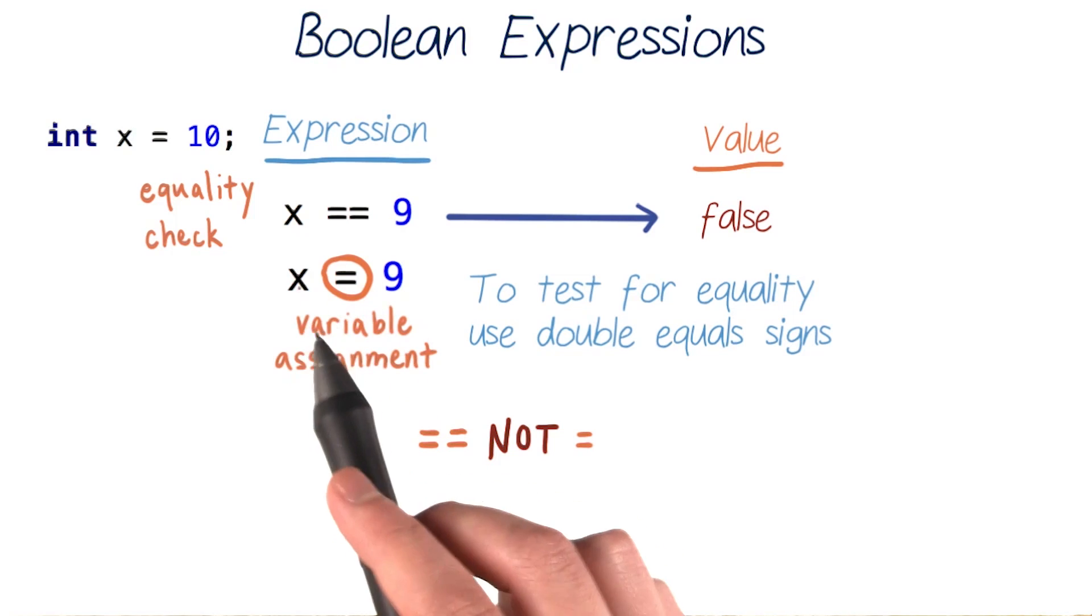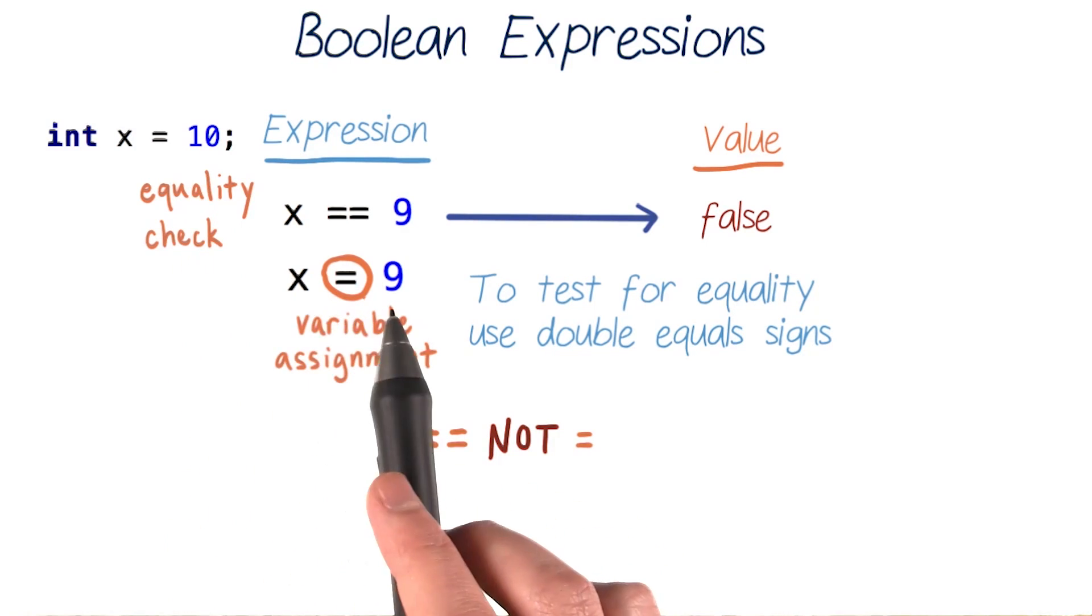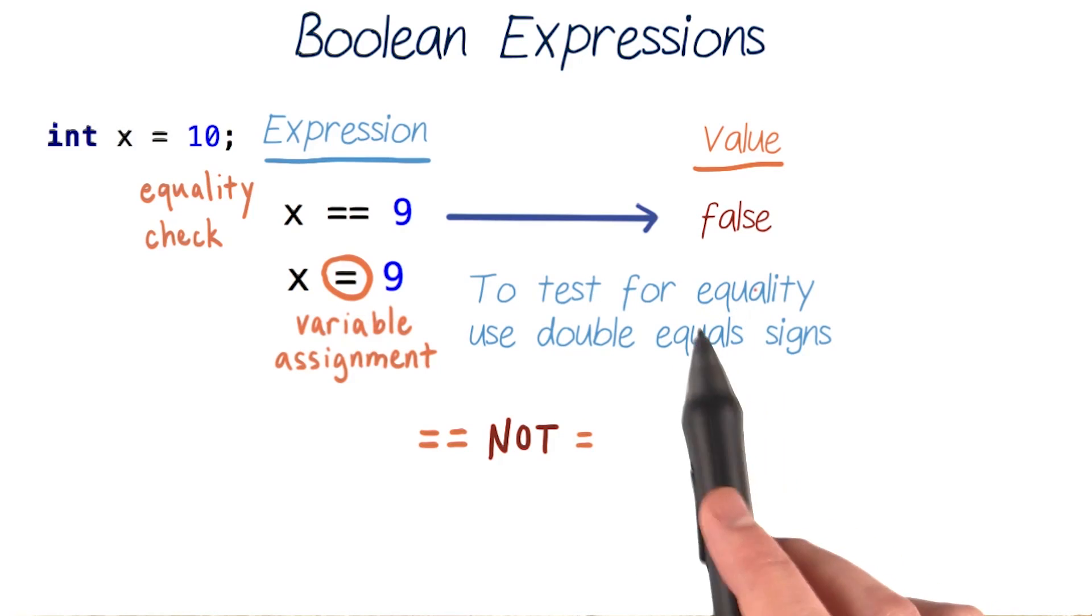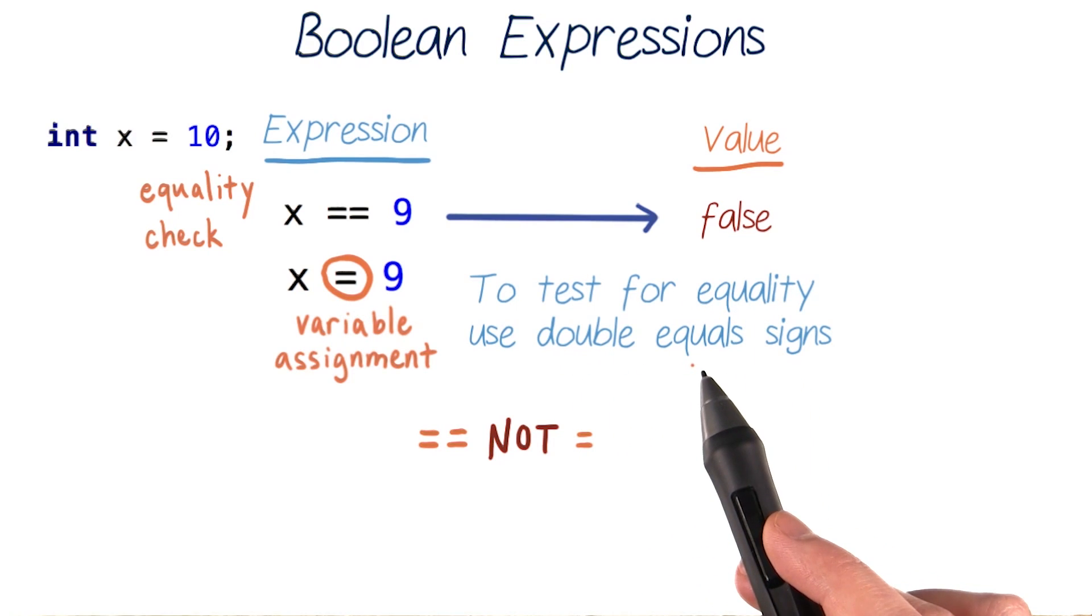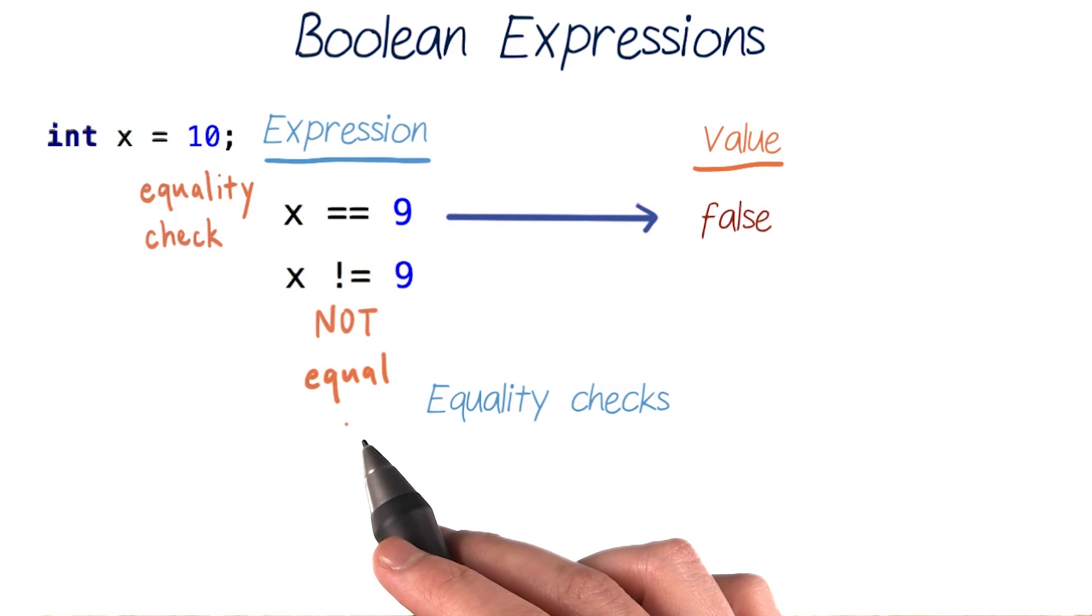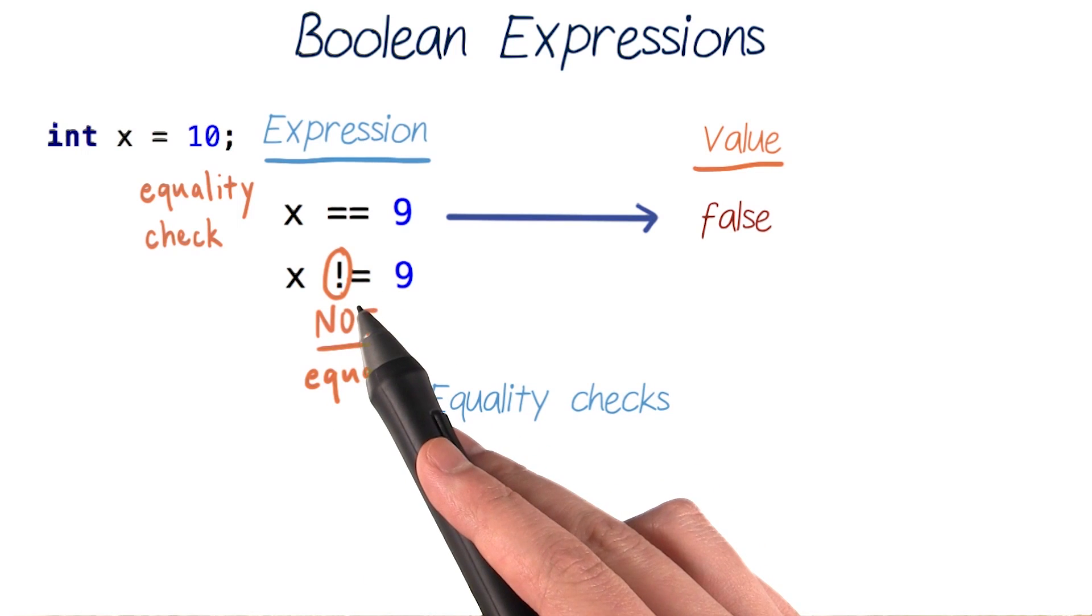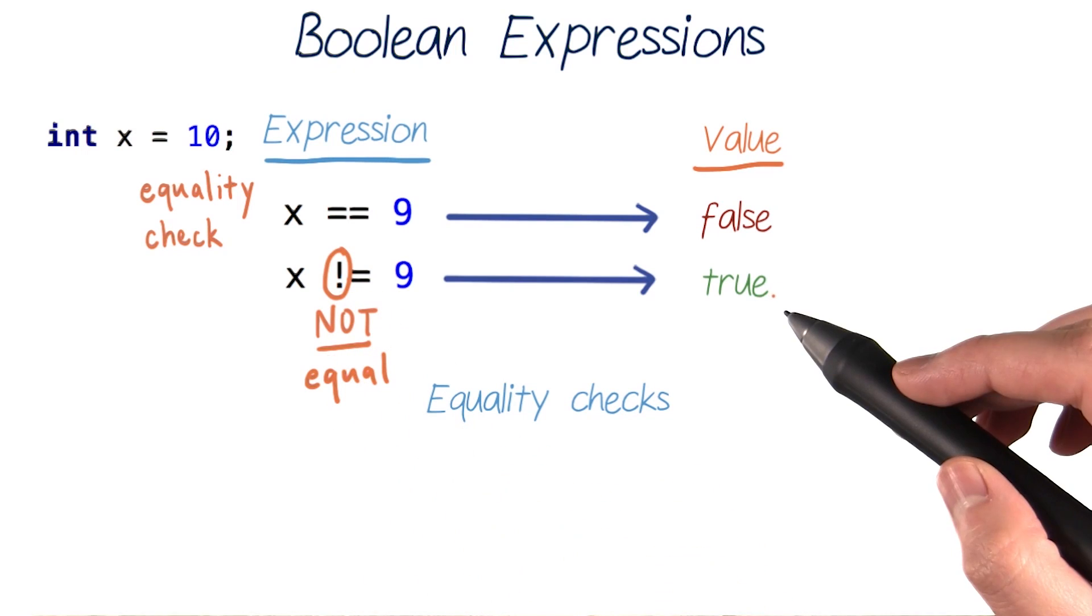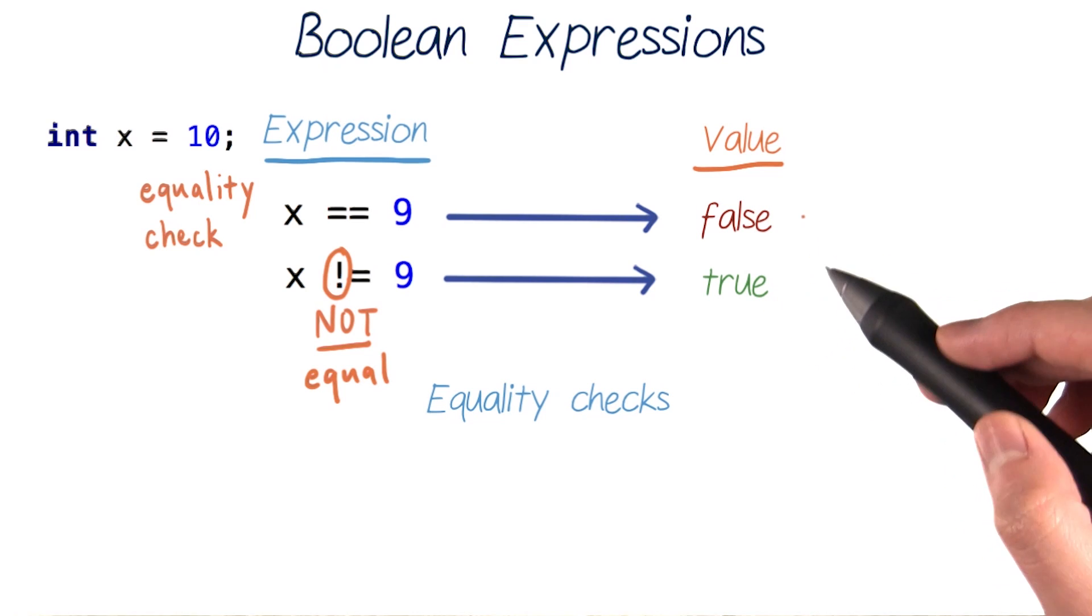But if we said x equals 9 with one equals, this would change the value of x from 10 to 9, and no boolean value will be calculated. So remember to use double equal signs to check for equality. And to check if two values are not equal, we use exclamation point equals, where this exclamation point means not. And so x not equal to 9 will evaluate to true because 10 is not equal to 9. It's the opposite of the previous equality check.